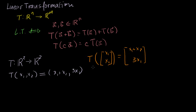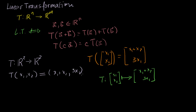A third way to write it — which captures the essence of what a transformation is as just a mapping or function — is: the transformation maps any vector [x1, x2] in R2 to the vector [x1 + x2, 3x1]. All of these statements are equivalent. Our whole point is to figure out whether t is a linear transformation.